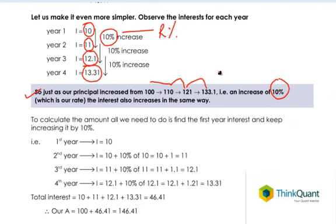We found that our principal went from 100 to 110, which is a 10 percent interest, then it went to 121 and then it came to 133.1 and so on.